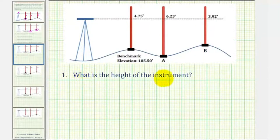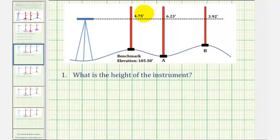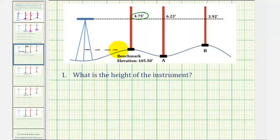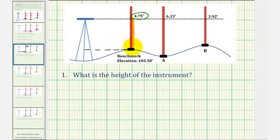Let's start by determining the height of the instrument, which we can think of as the elevation of this builder's level, or the builder's level line of sight. To do this, we'll be using the benchmark as well as the first reading. If the benchmark elevation is 105.5 feet, that means the elevation of the builder's level to this point here would also be 105.5 feet. So if we take the benchmark and add the first reading — which is the distance from the line of sight to the benchmark — this gives us the height of the instrument.